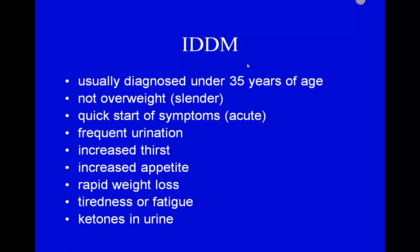IDDM is usually diagnosed under 35 years of age. These people are usually very slender and have an acute onset of symptoms — like the family on vacation who suddenly noticed their child constantly needed the bathroom. Frequent urination occurs because the kidneys recognize sugar in the blood as a waste product: if cells aren't using it, the body excretes it. Patients are also very thirsty and hungry because cells are not receiving glucose even though it's in the bloodstream.